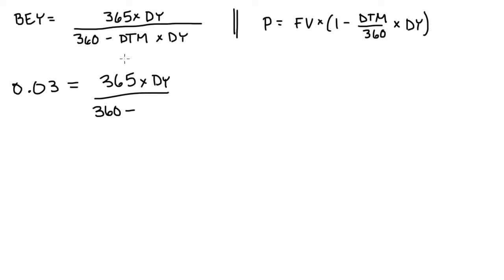Now the days to maturity, what I've abbreviated as DTM, is 90 days because that's when the bond will pay off or the t-bill will pay off.